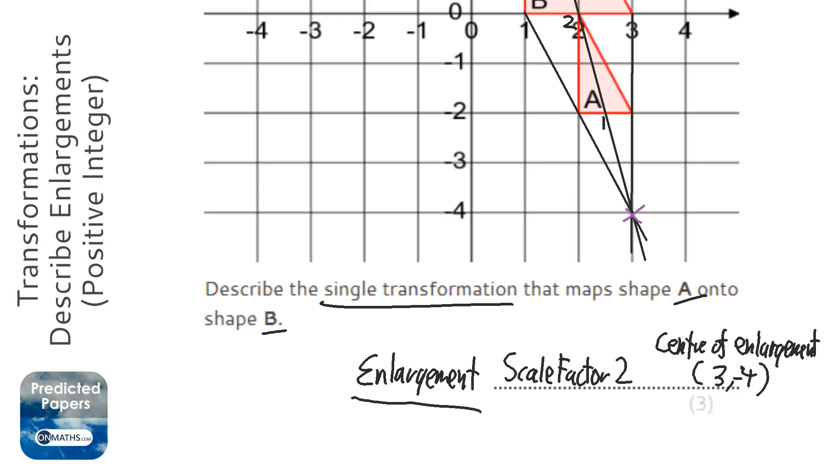Sometimes it's only two marks and you don't always get a mark for saying enlargement. However, you can't get full marks unless you say enlargement. So make sure you have the word enlargement and the scale factor to guarantee that you get that first mark, and then the second mark or third mark will be for the center of enlargement.